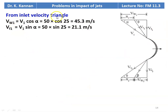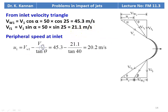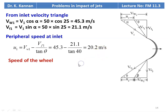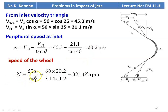From the inlet velocity triangle: Vw1 = V1 × cos(alpha) = 50 × cos(25°) = 45.3 m/s; Vf1 = V1 × sin(alpha) = 50 × sin(25°) = 21.1 m/s. The peripheral speed at the inlet U1 = Vw1 − Vf1 / tan(theta) = 45.3 − 21.1 / tan(40°) = 20.2 m/s. The speed of the wheel N = 60 × U1 / (pi × D1) = 60 × 20.2 / (3.14 × 1.2) = 321.65 RPM.